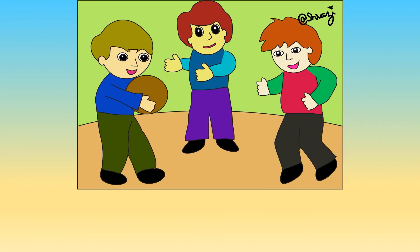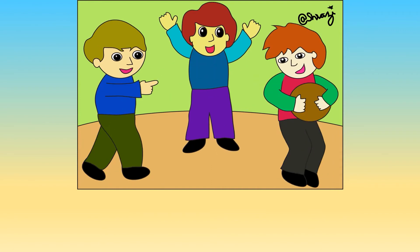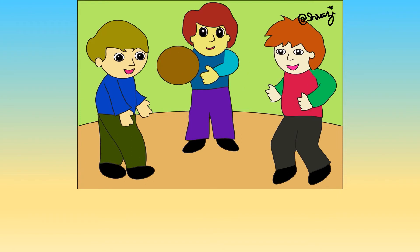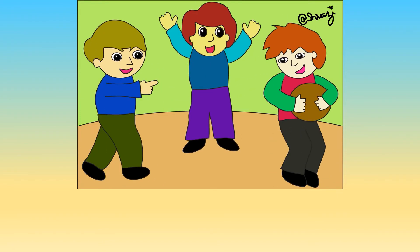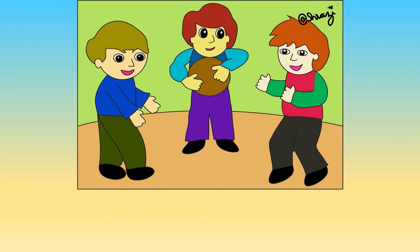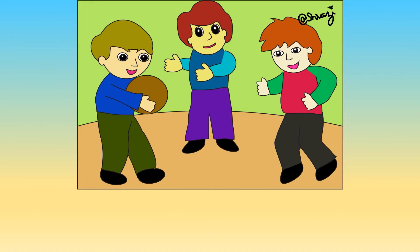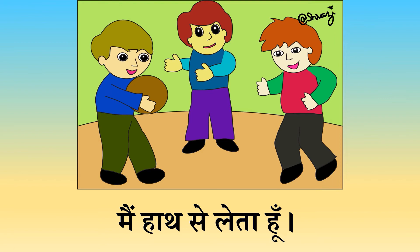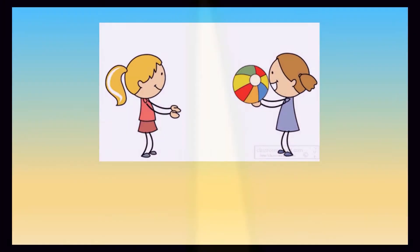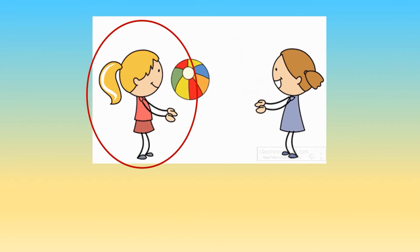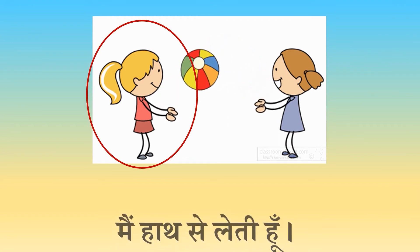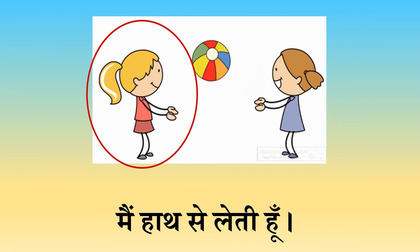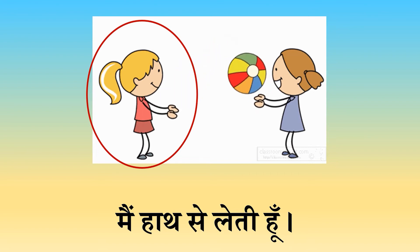इस चित्र को देखिए बच्चो। एक लड़का दूसरे लड़के को गेंद देता है। तो दूसरा लड़का उससे गेंद लेता है ना? तो वह बोलेगा: मैं हाथ से देता हूँ। और यहाँ पर लड़की बोलेगी: मैं हाथ से देती हूँ। वहाँ हाथ से क्या लेती है? हाँ, वहाँ गेंद लेती है।